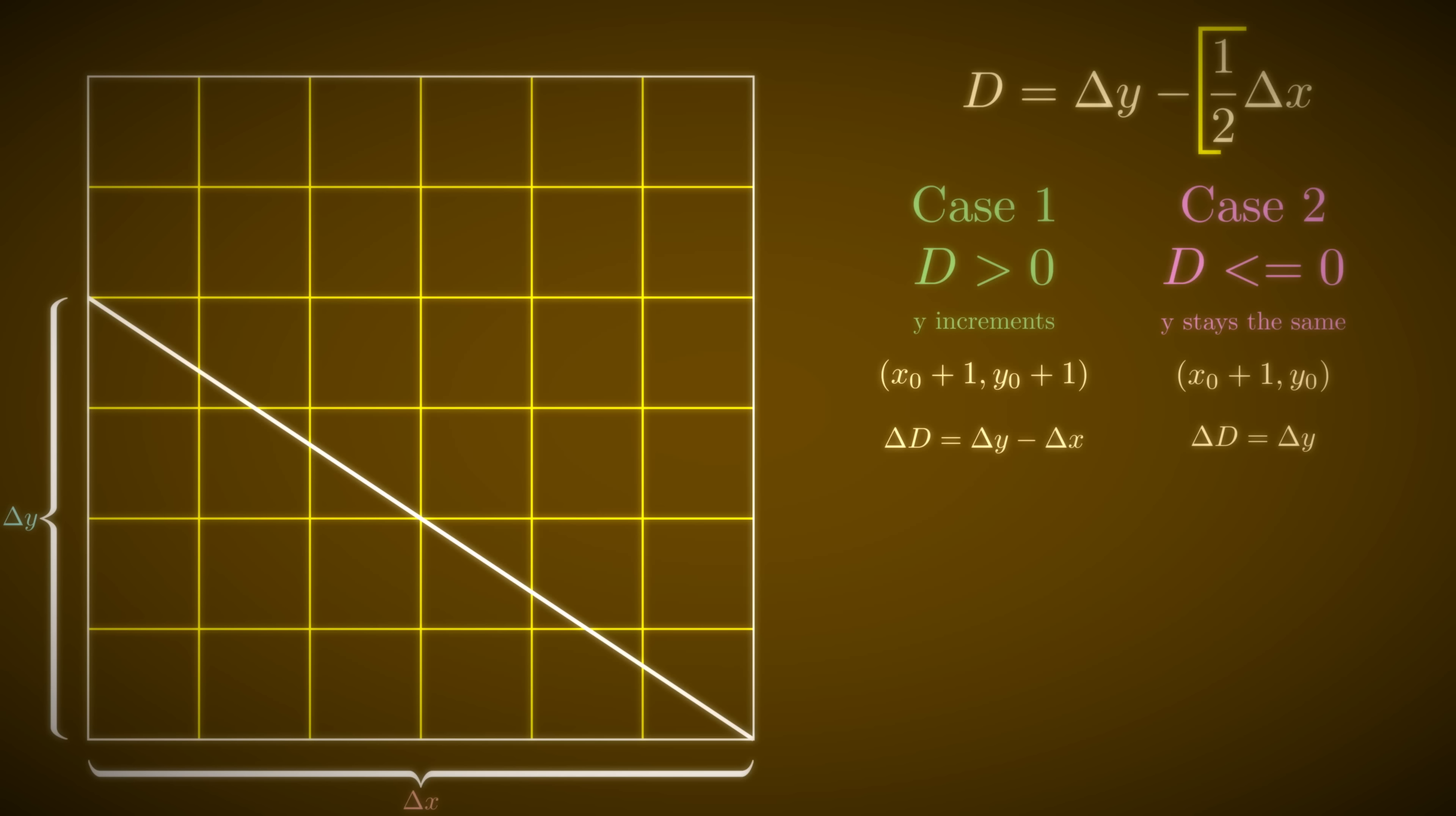But it looks like we are still using fractions in our calculations. Well, since we only care about the sign of the accumulated difference, we can multiply everything by 2 to get rid of them. And voila, we have a fast Bresenham line algorithm.